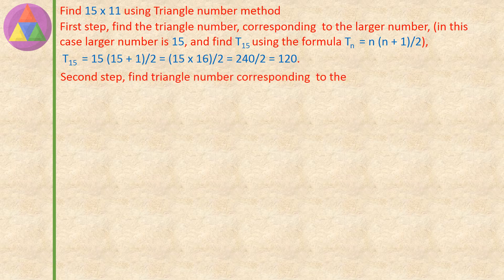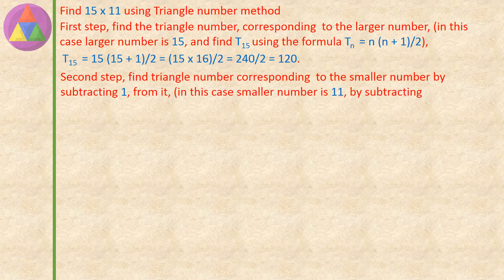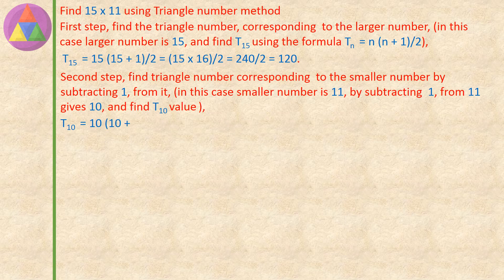Second step: find the triangle number corresponding to the smaller number by subtracting 1 from it. In this case the smaller number is 11; subtracting 1 from 11 gives 10, and we find T10. T10 equals 10 into (10 plus 1), divided by 2, equals 10 into 11, divided by 2, equals 110 divided by 2, equals 55. So T10 value is 55.